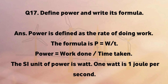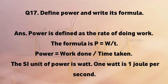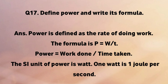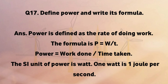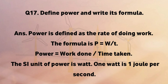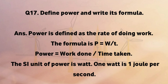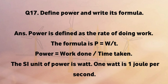Define power and write its formula. Power is defined as the rate of doing work. The formula is P equals W divided by T, which is power equals work done divided by time taken. The SI unit of power is the watt; one watt is one joule per second.